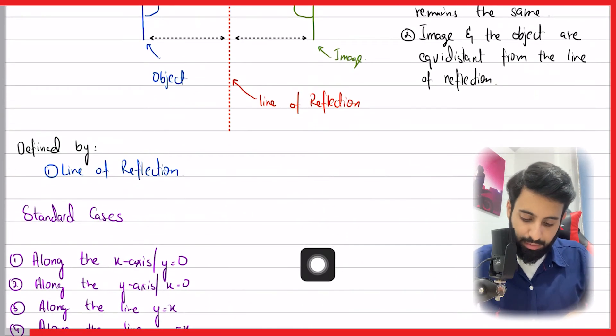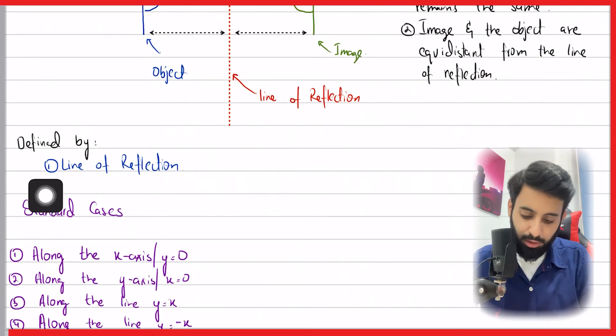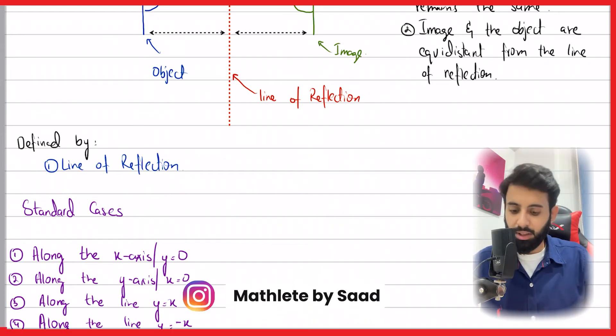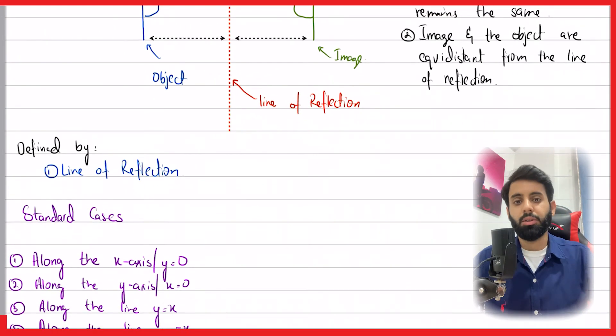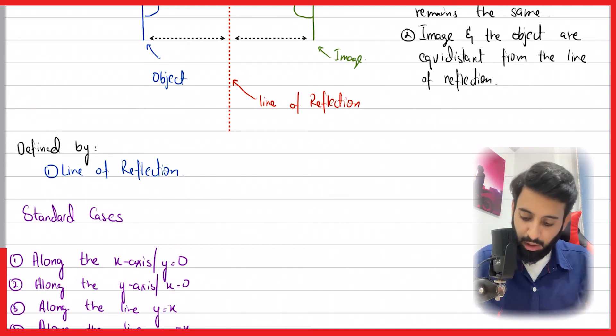In order to define a reflection, we need to know what the line of reflection is. For example, if I ask you to reflect an object, that's incomplete information because I need to also tell you what is the line of reflection. In order to reflect an object, you need to know what the line of reflection is. That's very important.